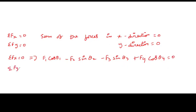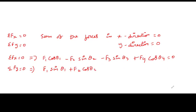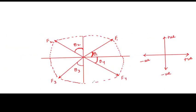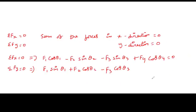For ΣFy = 0: F1 moves upward and the opposite side uses sinθ1, so +F1·sinθ1. In the second quadrant, F2 moves upward and uses cosθ2, so +F2·cosθ2. F3 moves downward, giving −F3·cosθ3. F4 moves downward and uses sinθ4, giving −F4·sinθ4 = 0.